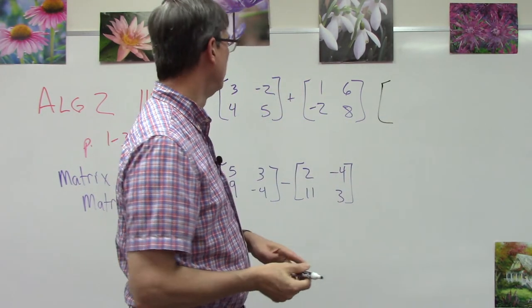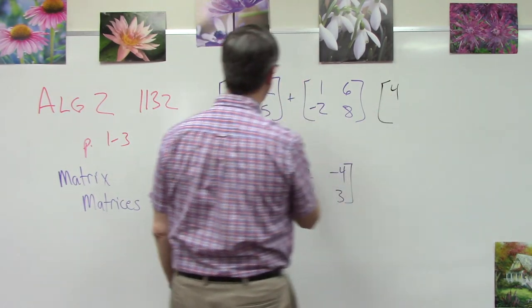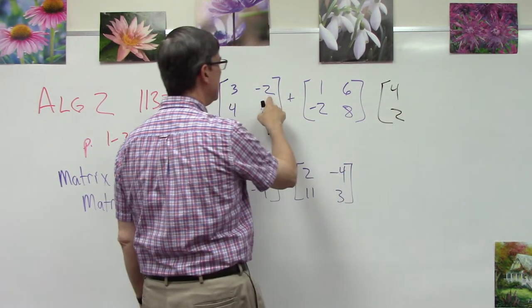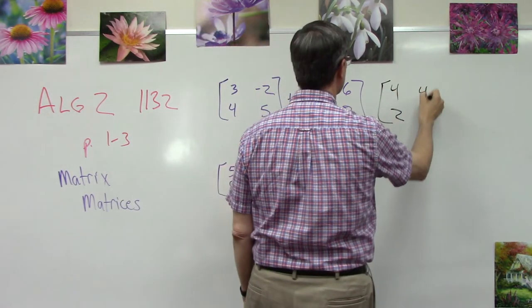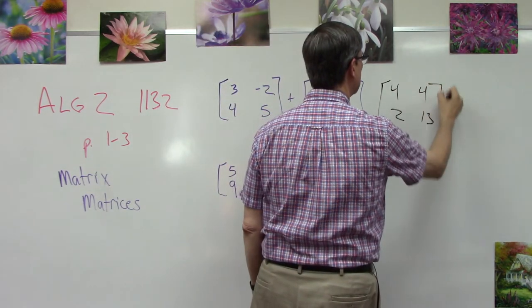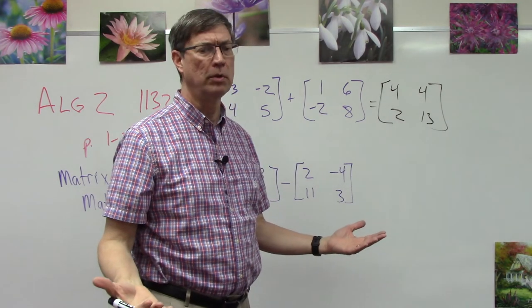So, I mean, I could write out for you three plus one, I'm just going to write the answer four. And then we go back and we take this position, four plus negative two is two. Negative two plus six is four. Five plus eight is 13. That's the answer. That's all you're doing. It's pretty simple.